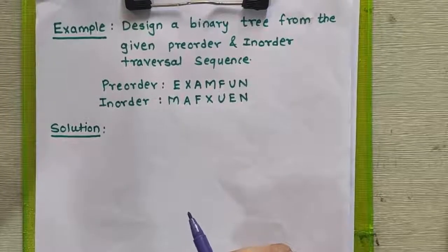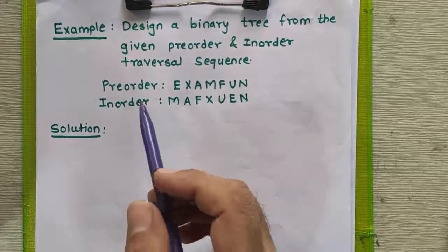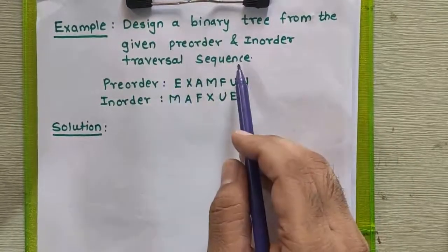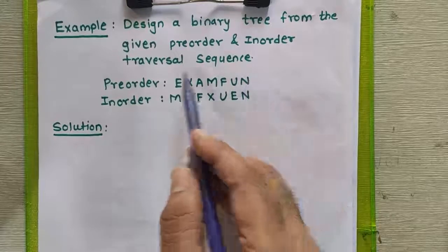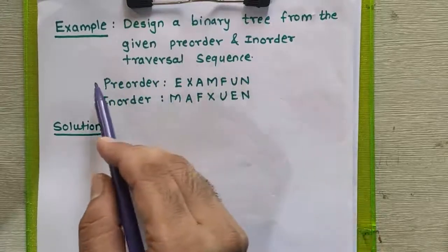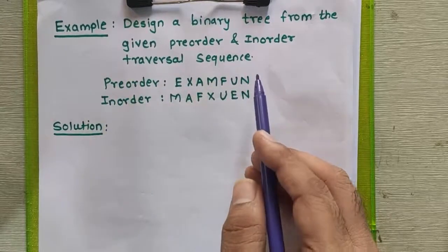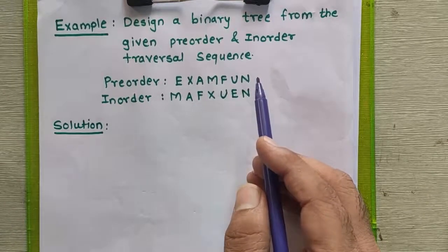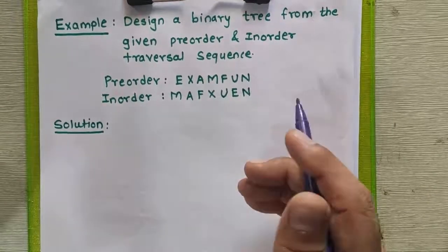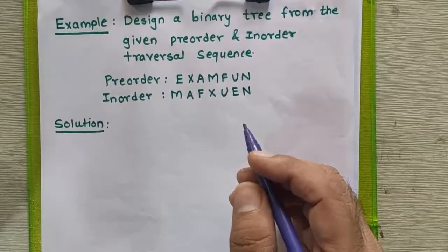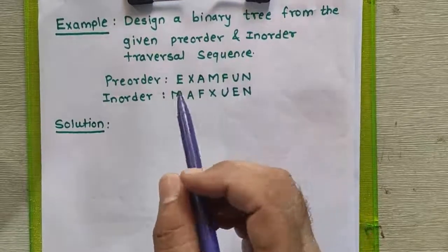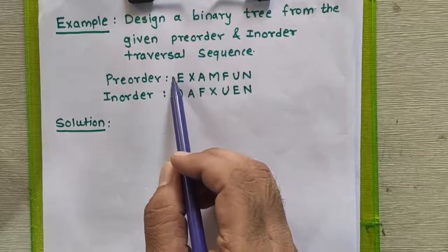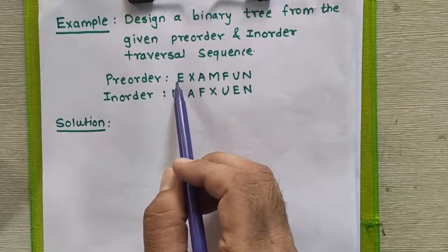Hello friends. In this tutorial we will study how to design a binary tree from given pre-order and in-order traversal sequences. Consider the traversal sequence given to us — how do we find the root node of the tree? As we know, in pre-order sequence the root node always comes at the beginning, so we can easily get the root node. This node E comes at the first place, so it is the root node of this tree.